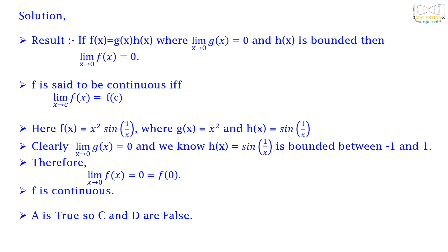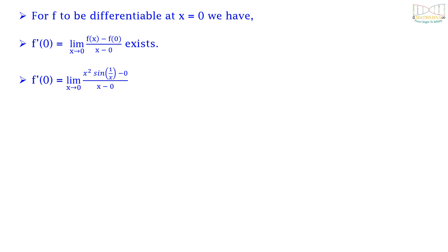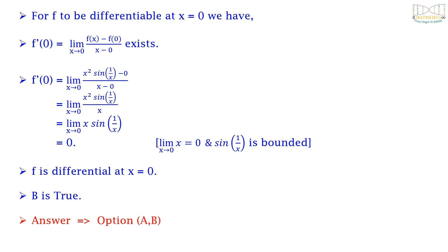Therefore option (a) is true and so (c) and (d) are false. Now we check option (b) for differentiability. For f to be differentiable at x = 0, we need f'(0) = limit as x → 0 of [f(x) - f(0)] / (x - 0) to exist. This equals the limit as x → 0 of x² sin(1/x) / x = limit of x · sin(1/x) as x → 0, which equals 0, since x → 0 and sin(1/x) is bounded. Therefore f is differentiable at x = 0, so option (b) is also true.